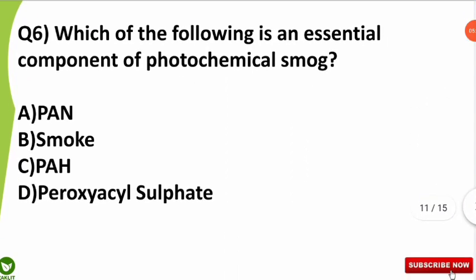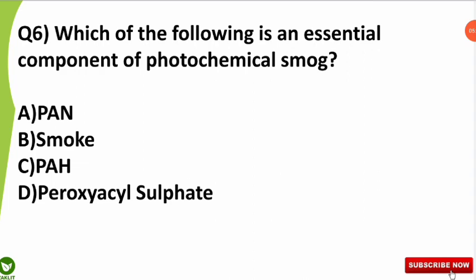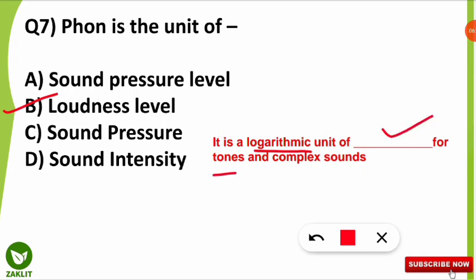The next question was about photochemical smog: which of the following is an essential component of photochemical smog? All participants answered correctly — option A, PAN, is the essential component of photochemical smog. You can find a link in the description to learn about different types of smog and their reactions, which will be very helpful for examinations. The seventh question was about phon — phon is the unit of measuring the loudness level, a logarithmic unit for tones and complex sounds.